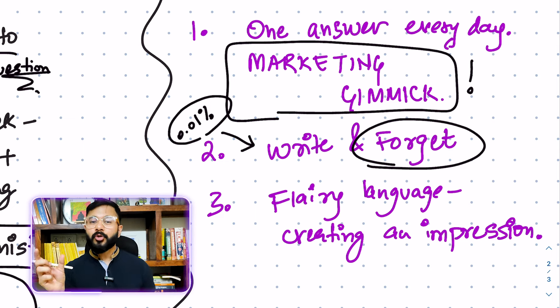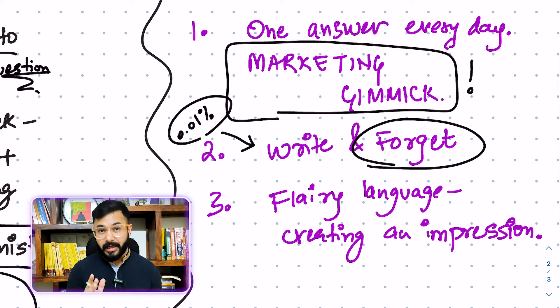So write and then read yourself what you have written. Try and figure out where have you gone wrong. Don't be scared of seeing your own weaknesses. Don't be scared of seeing how badly you have written an answer. It's okay. Don't judge yourself. Just try and give yourself that time and that practice that is required to gain, to attain perfection in your writing.